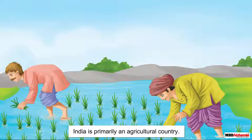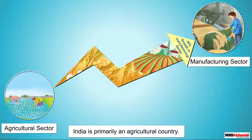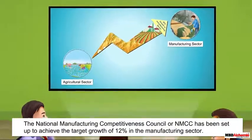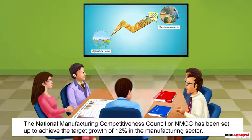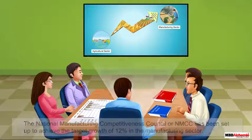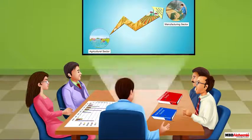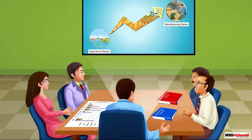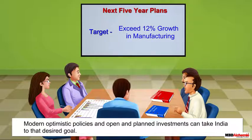India is primarily an agricultural country; however, in the last 20 years it has shown tremendous growth in its manufacturing sector. The Government of India has set up the National Manufacturing Competitiveness Council, or NMCC, with an objective to achieve target growth in the manufacturing sector. Economists and planners predict that in the next five to six years India will exceed this target. Modern, optimistic policies and open and planned investments can take India to the desired goal.